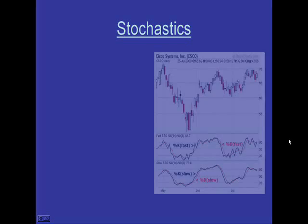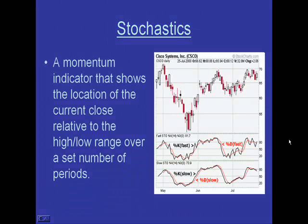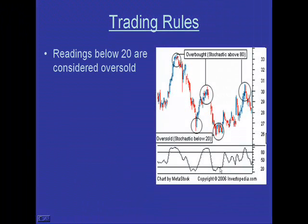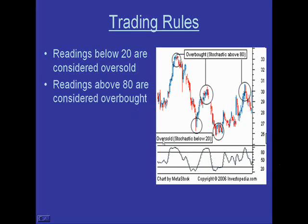Moving on to Stochastic. Stochastic is another momentum indicator that shows the location of the current close relative to the high-low range over a set number of periods. All we're really looking for here is above 80 and below 20. Readings below 20 are considered oversold — when we get down below 20, you can tighten your stops and prepare to get into a long position. Just like RSI, as we cross back up that can give you a signal to get into a trade. Readings above 80 are considered overbought — that's basically when we topped out.